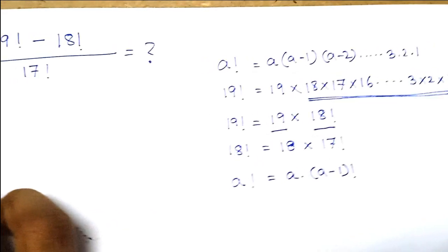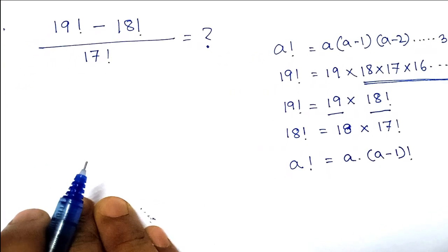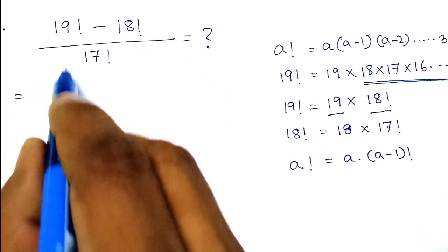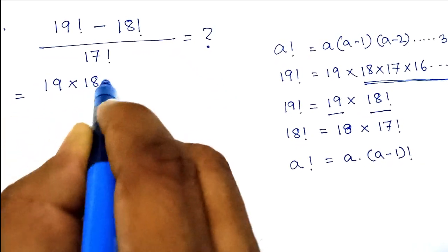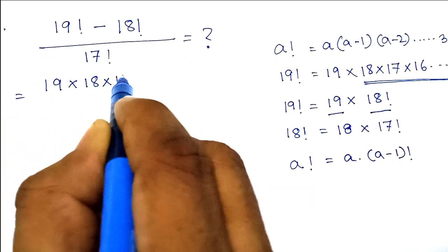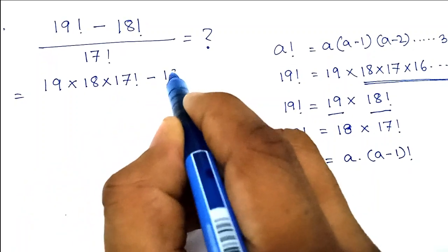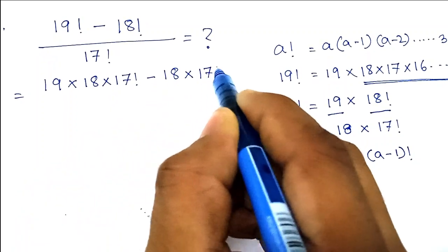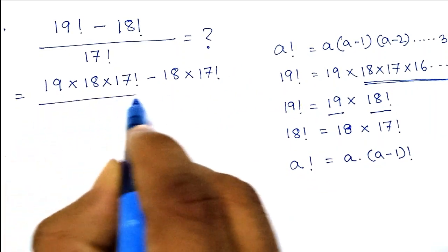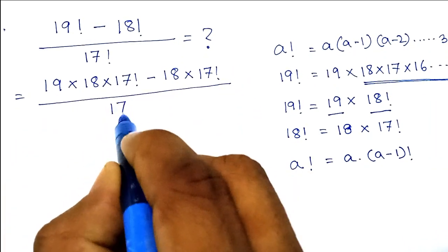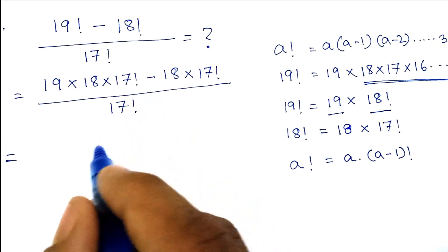Using this, we will simplify our expression and write it as 19 into 18 into 17th factorial, minus 18 into 17th factorial, and then divide it by 17th factorial.